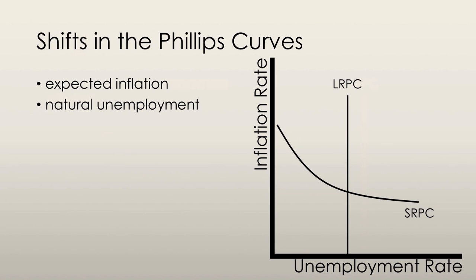A change in the expected inflation rate will shift the short-run Phillips Curve and only the short-run Phillips Curve. The intersection of the long-run and short-run Phillips Curves indicates the expected rate of inflation. If the expected inflation rate increases, the short-run Phillips Curve shifts upward, and if it decreases, then the short-run Phillips Curve shifts downward.